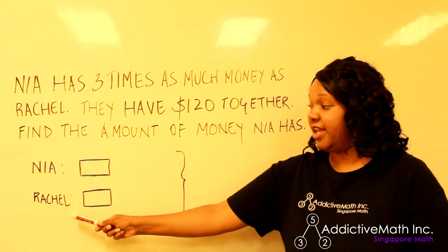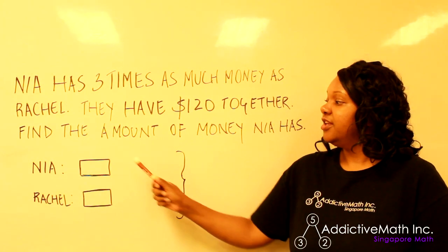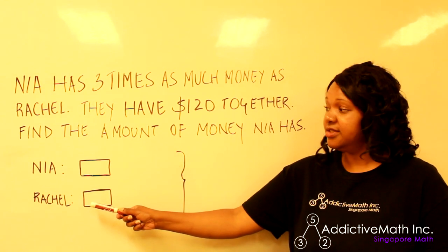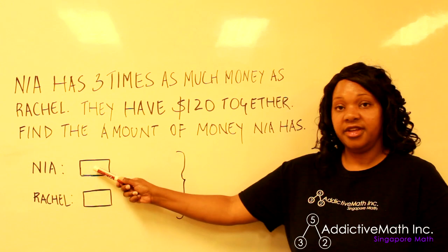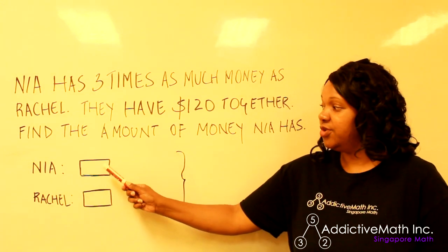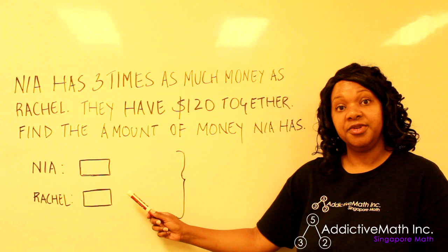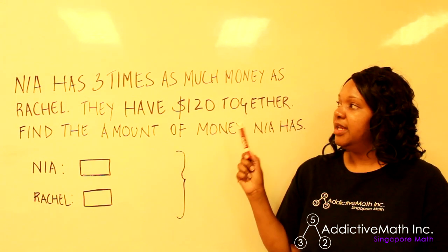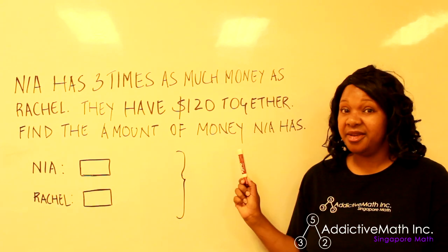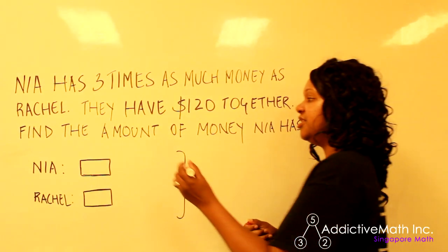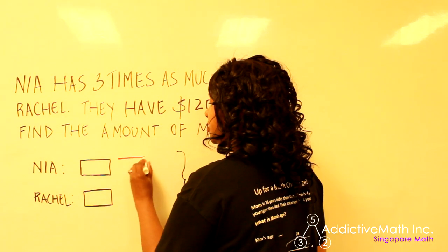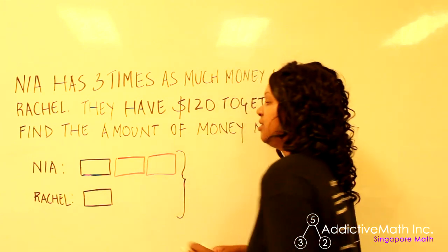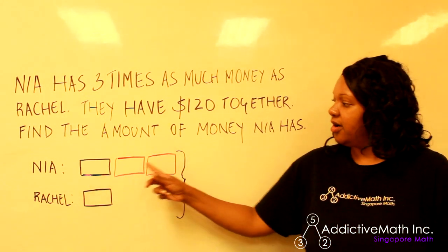The first thing I encourage you to do, outside of writing down the names in the problem, is to draw your bars. This problem has Nia and Rachel, so we draw equal bars for them at first. Then, reading through — Nia has three times as much as Rachel — so Nia needs three bars. She has one already, that's two, and this will be the third. So Nia has three bars and Rachel has one bar.